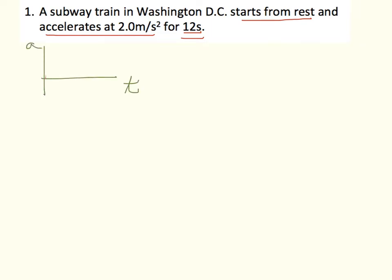The train is accelerating in a constant way at 2 meters per second squared, so I'll draw a straight horizontal line at 2 meters per second squared that lasts for 12 seconds. I'll mark 12 seconds on the time axis.